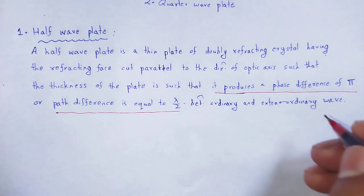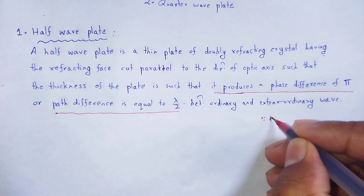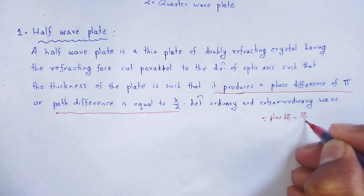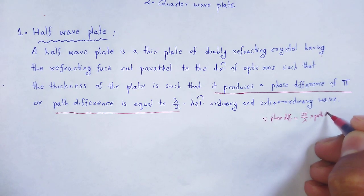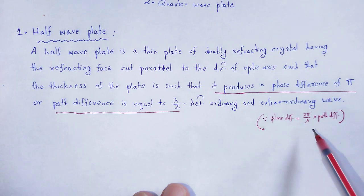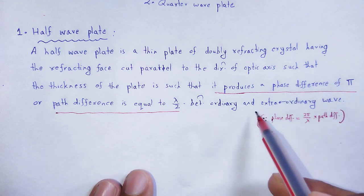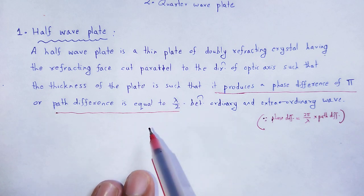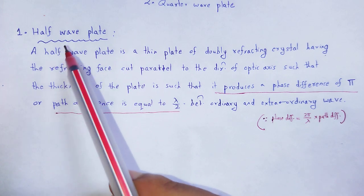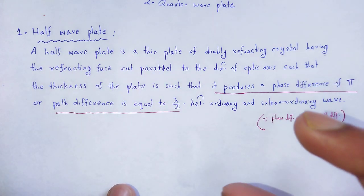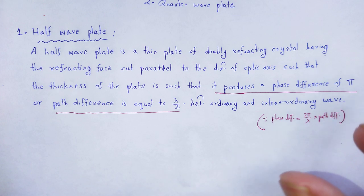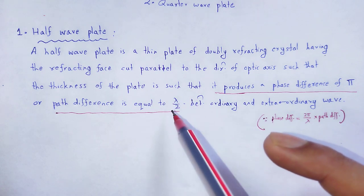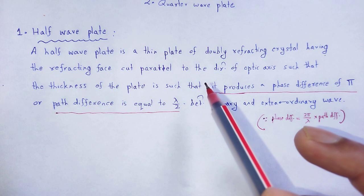A phase difference of pi means a path difference equal to lambda by 2 between the E ray and O ray. Using the relation: phase difference = (2π/λ) × path difference, if the phase difference between O ray and E ray is pi, then there will be a path difference of lambda by 2. That is why such a wave plate is called a half wave plate — the thickness is such that it produces a path difference of lambda by 2, half of the wavelength of the incident wave.